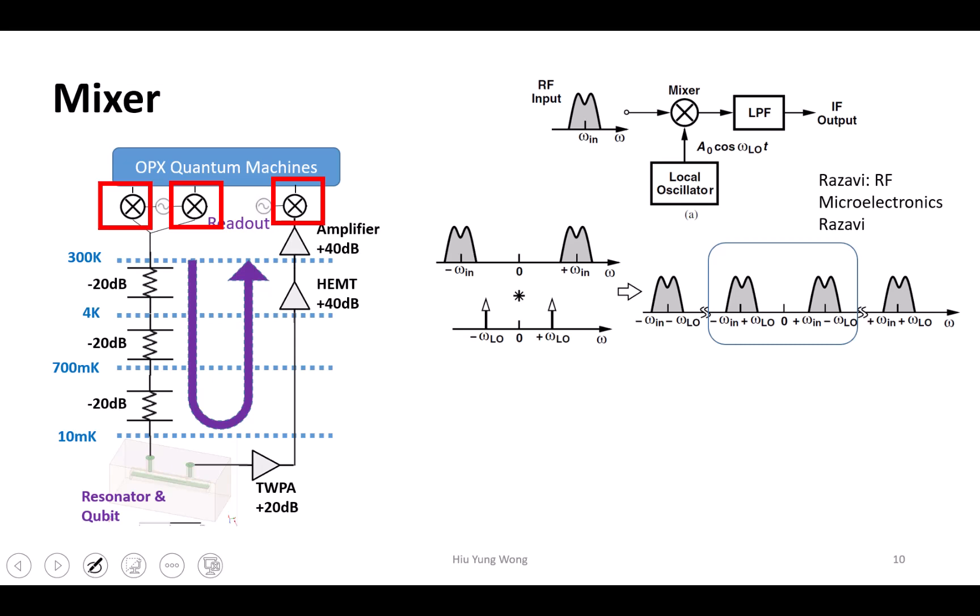Mixer basically is just an analog multiplier. For example, if I have a pulse like this and then I multiply this by a high-frequency wave, it's easy to understand. When you are zero, then everything is zero. When you are one, then you just get this wave. So basically this is just like a modulation.